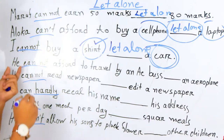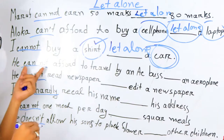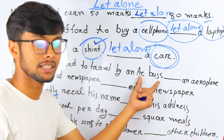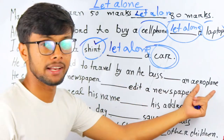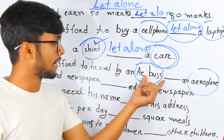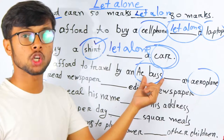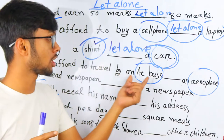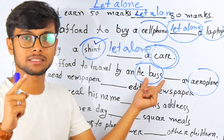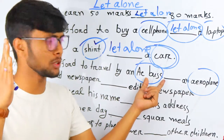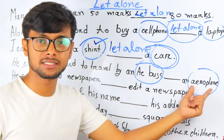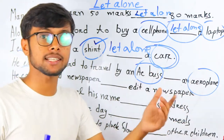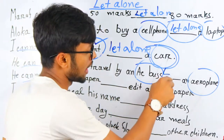Number four: 'He cannot afford to travel by an AC bus, let alone an airplane.' Remember, a bus is not costly, but this person cannot even travel by bus. So how is it possible to travel by airplane? Never. At this moment in this sentence you use 'let alone.'